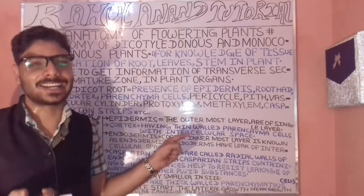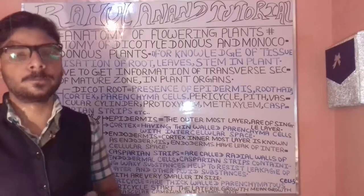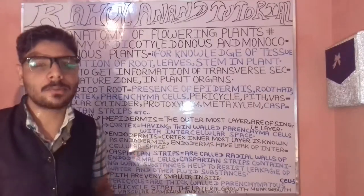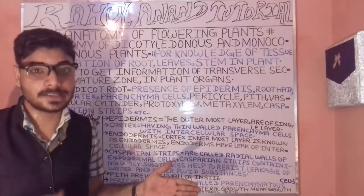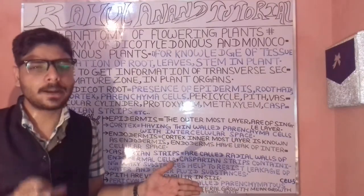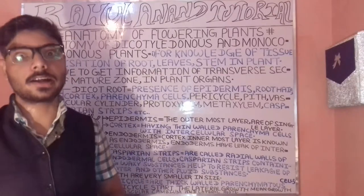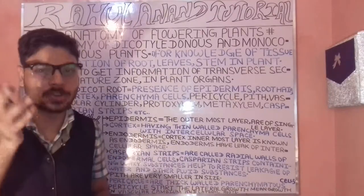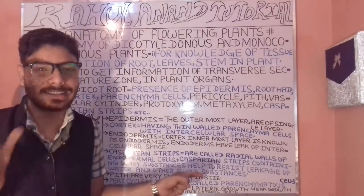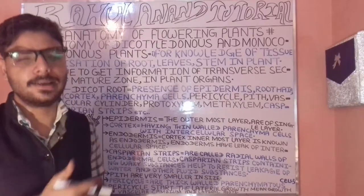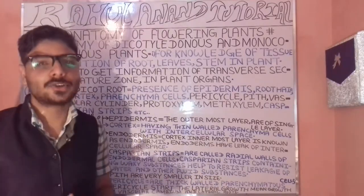Epidermis: the epidermis is the outermost covering — the outermost layer — and these are particularly a single layer. After that you are having the cortex region.